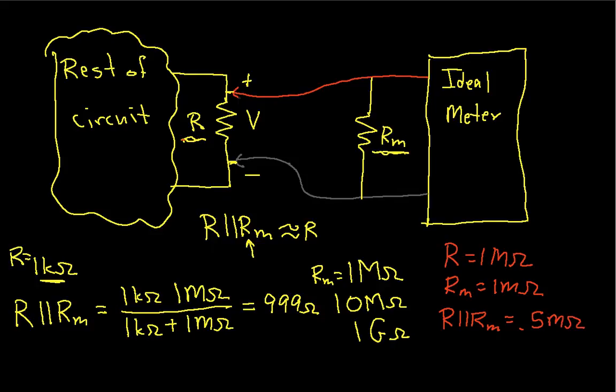So if this R is about the same as the meter resistance, input impedance, then the voltage that I measure across this resistor will go down by a factor of 2. In other words, it will be half of what I would expect to see had I not connected the meter.